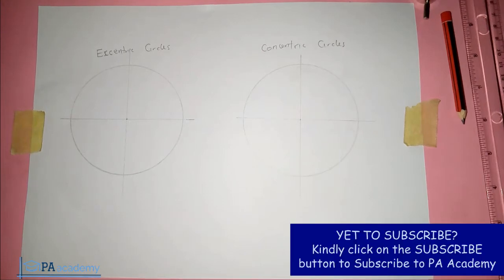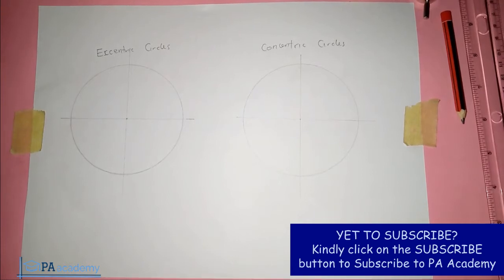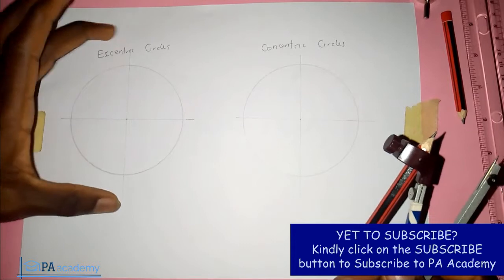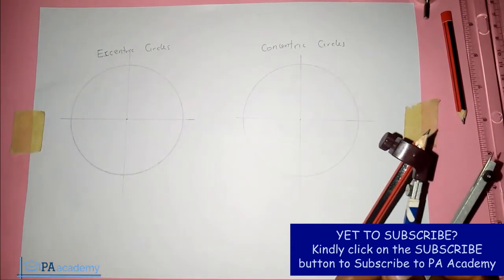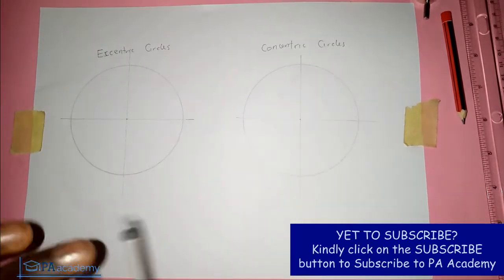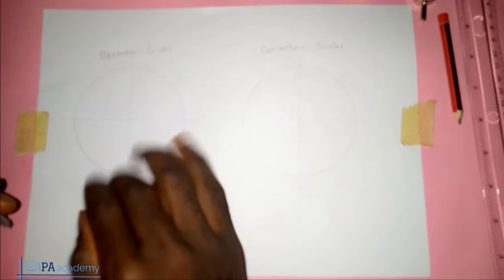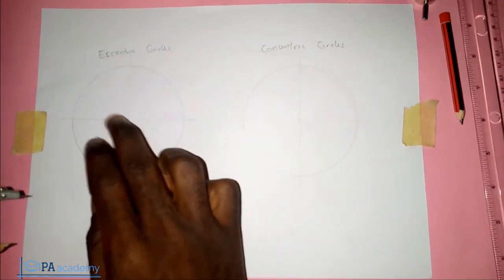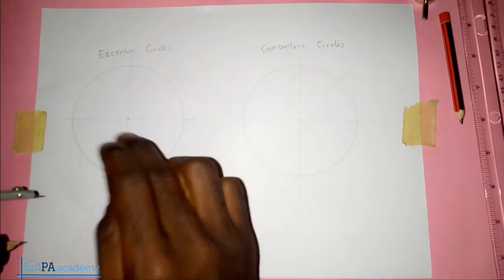Hello and welcome to PA Academy. In this video I'm going to be explaining the difference between concentric circles and eccentric circles. When we talk about the eccentric circle, what it means is that the center of the circles are different.